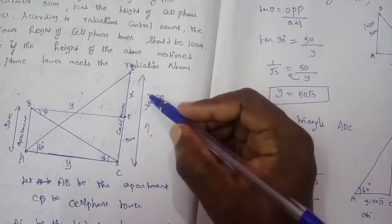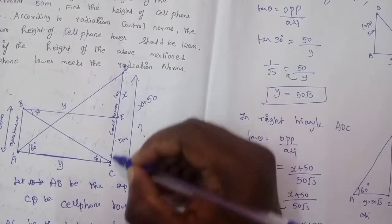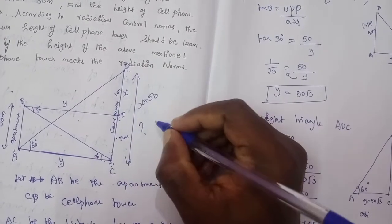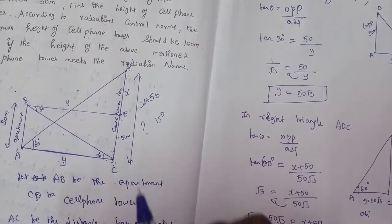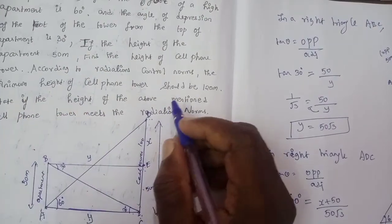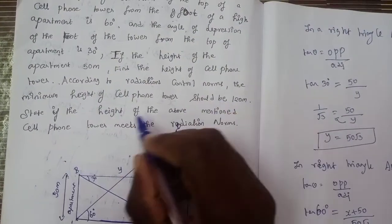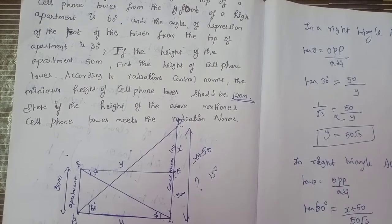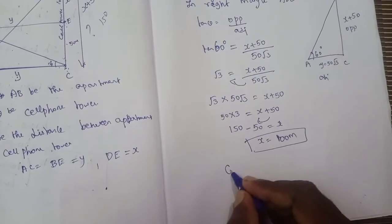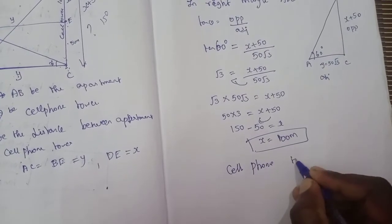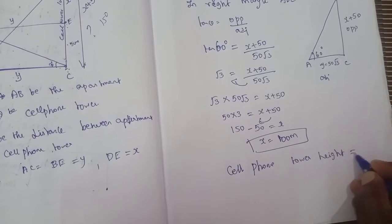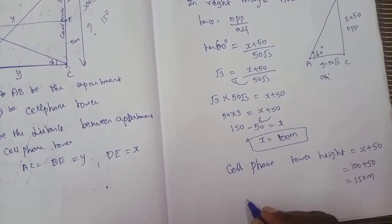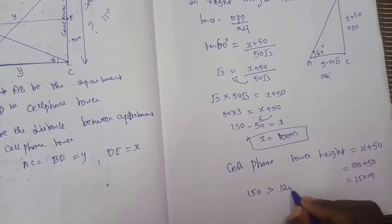So x equals 100 meters. The total cell phone tower height equals x plus 50, which is 100 plus 50, equals 150 meters.